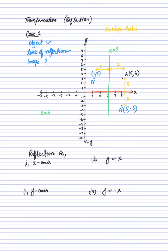There are four basic cases you will see in past papers. The first is reflection across the x-axis. When reflecting across the x-axis, the point x comma y maps onto x comma minus y. Applying this to point A at 5 comma 3: the x-coordinate remains the same but the y-coordinate changes its sign, giving 5 comma minus 3.